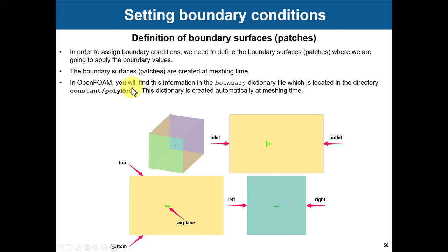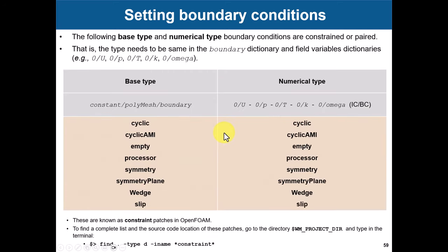Regarding boundary conditions — there are about a hundred in OpenFOAM and people get confused. When you do the mesh you need to create the surfaces, patches, groups, or name selections where you want to apply boundary conditions. If you don't have those surfaces, that is a problem. At mesh time you need to define those surfaces — I'll show you some tricks in the tutorials.